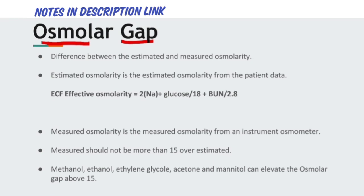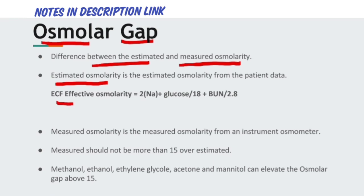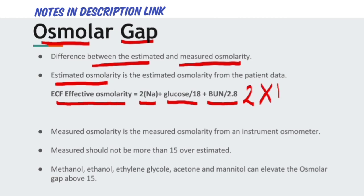Now let's discuss the osmolar gap. The osmolar gap is the difference between the estimated and the measured osmolarity. Estimated osmolarity is calculated from patient data using the extracellular solutes. The formula to calculate extracellular fluid osmolarity is: 2 × sodium + glucose/18 + BUN/2.8.